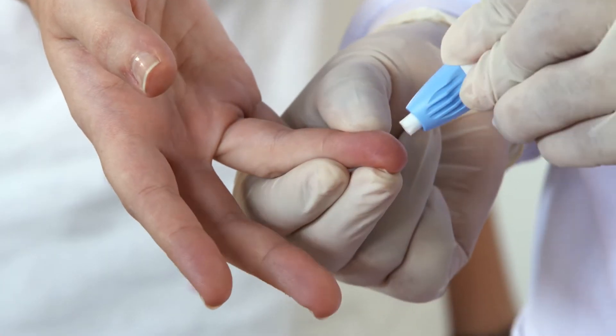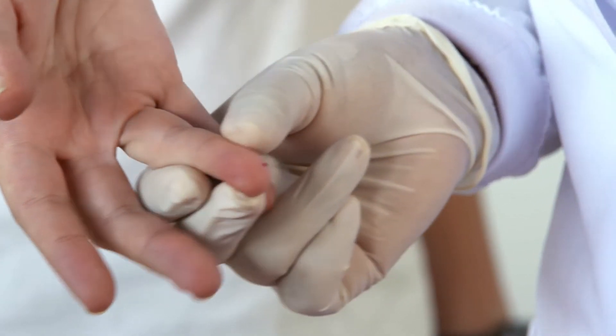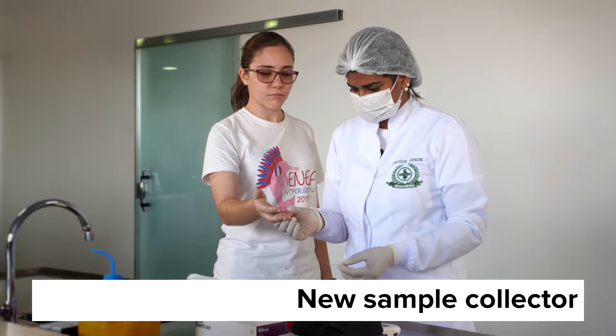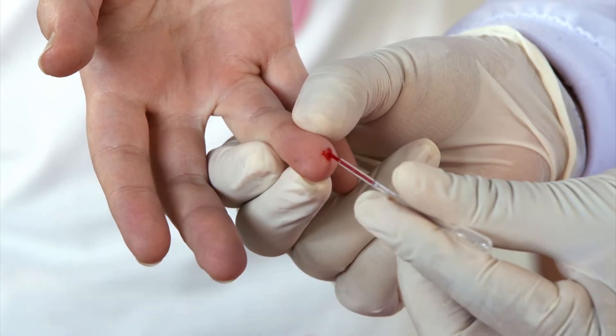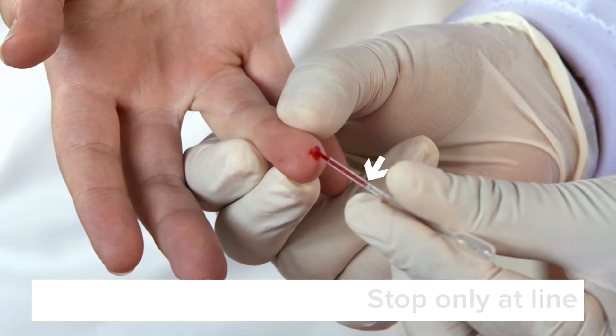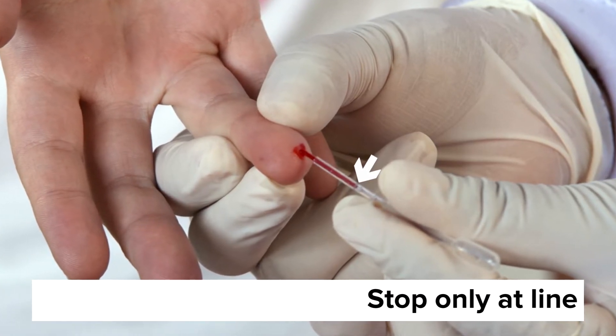For increased sample purity, use the second drop of blood rather than the first. Use a new sample collector, hold it by the stem horizontally and gently touch the tip to the blood drop. Blood will automatically fill the sample collector to the black line. Stop only when it reaches the black line, 10 microliters. It's important to get the right amount of blood.